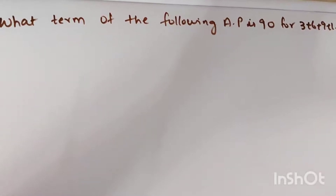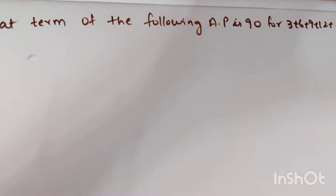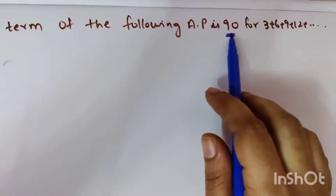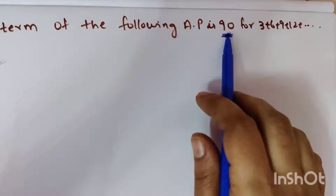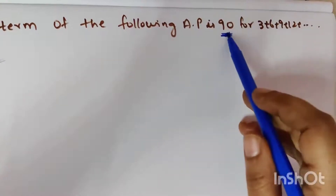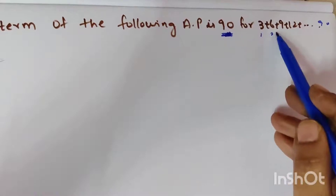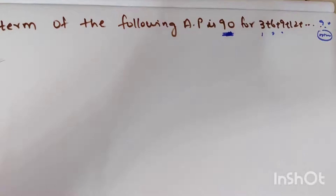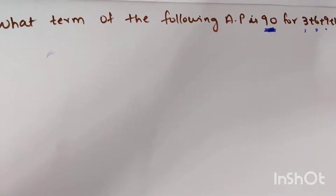This next question is a little different. Instead of finding a specific term, it asks: what term of the AP 3 + 6 + 9 + 12 + ... equals 90? Here we are told the value of the term is 90, and we need to find at which nth term we get that value.